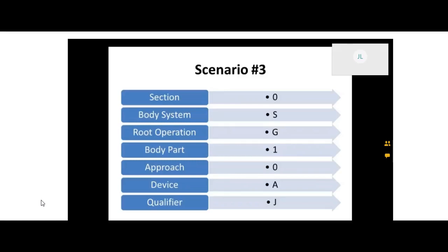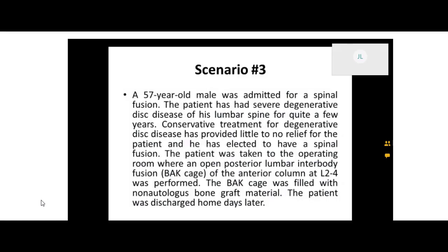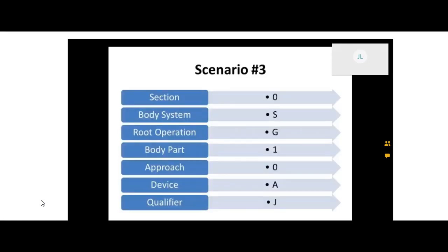So our code is going to be 0SG10AJ. Make sure you pick that posterior approach and anterior column. They did an open posterior lumbar interbody fusion — meaning they went into the patient through the back, through the posterior, to fix the anterior column. Do you guys have any questions about that before we do our final one? I know we're over time — I do apologize.